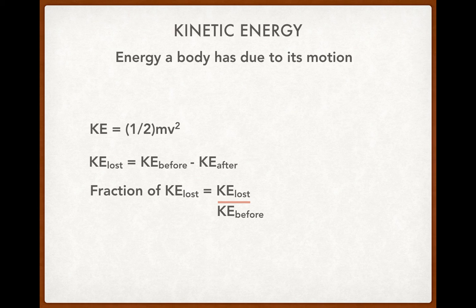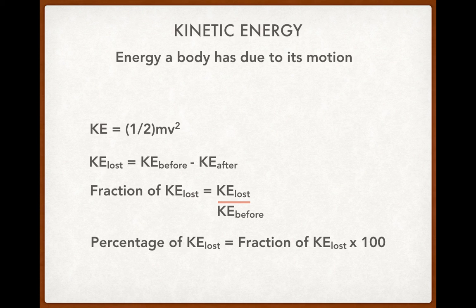The final formula is the percentage of kinetic energy lost. And that's just the fraction of kinetic energy lost by 100. The fraction of kinetic energy loss being the line above. So to calculate the percentage of kinetic energy lost, you could just say it's the kinetic energy lost divided by the kinetic energy before multiplied by 100.